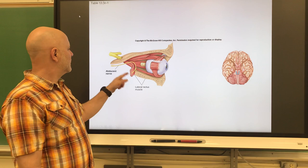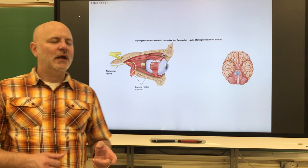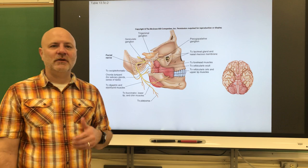This is the abducens nerve — you can see where it comes from. The abducens is also a motor nerve and it also helps move the eyes.